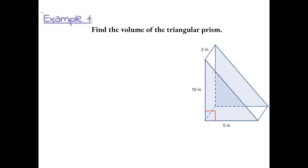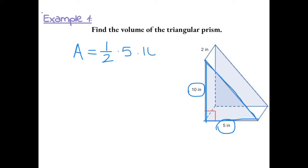Example 1: Find the volume of the triangular prism. To find the volume of a triangular prism, you first have to find the area of one of the triangular sides. The area of a triangular side is one-half times the base, which is 5, times the height, which is 10. One-half times 10 gives us 5, and then 5 times 5 gives us 25.